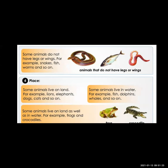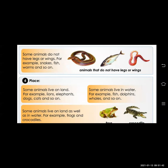Some animals do not have legs or wings. For example, snake, fish, and worms. Looking at pictures here — snake, fish, worms — they do not have legs or wings. They crawl and scroll to move.